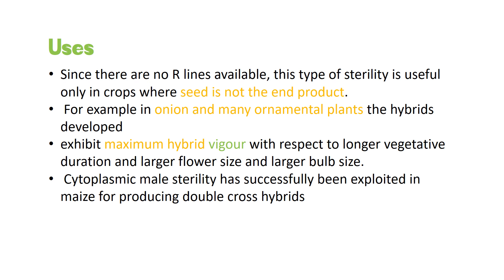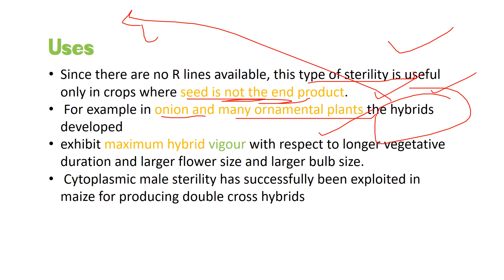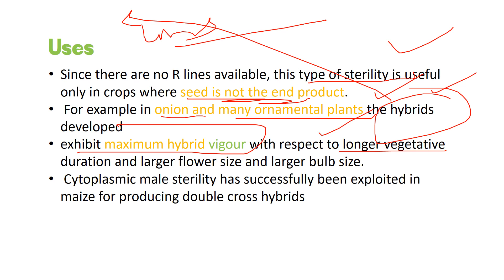The main use of cytoplasmic male sterility is in crops where seed is not the end product, such as onion and many ornamental plants, where hybrids can be developed using this technique. It exhibits maximum hybrid vigor due to longer vegetative duration and larger flower and bulb size. It has also been exploited in maize for producing double cross hybrids.